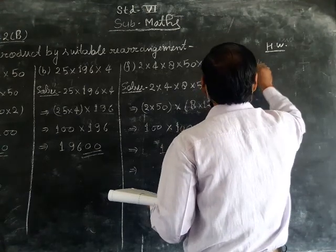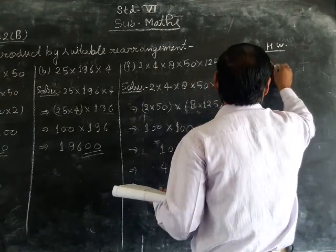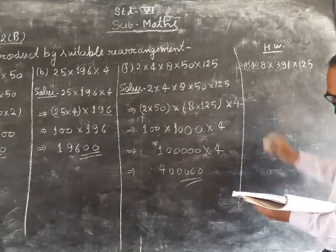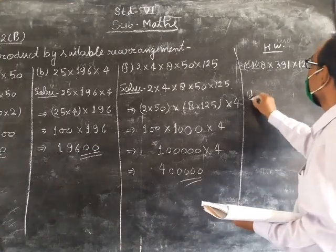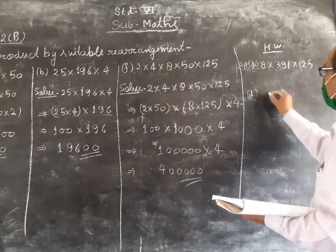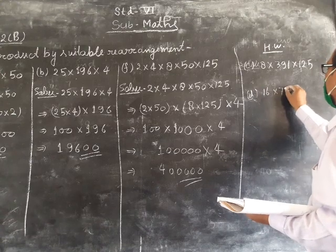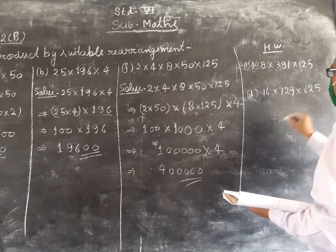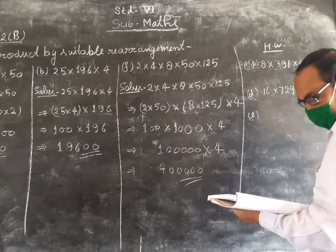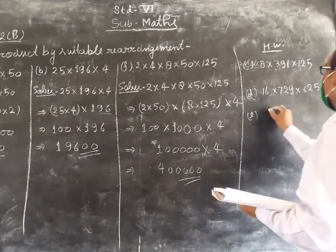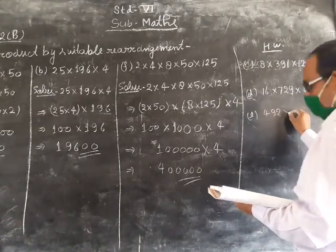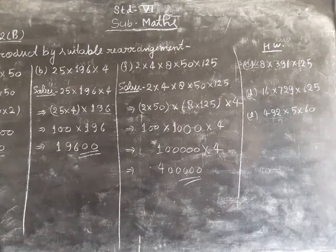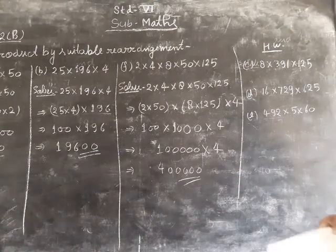Part D: 8 multiply by 309 multiply by 125. Part E: 492 multiply by 5 multiply by 50. These are the remaining problems. Thank you.